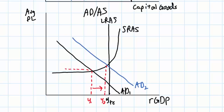Along with that growth comes a little but not a lot of demand-pull inflation. The reason there is not much inflation is that there are many unused resources in the economy. When the economy is producing below full employment, labor, land, and capital are relatively abundant. Therefore, firms can meet the higher level of demand without raising their prices and without having to pay more for their resources, so we see an increase in actual output.